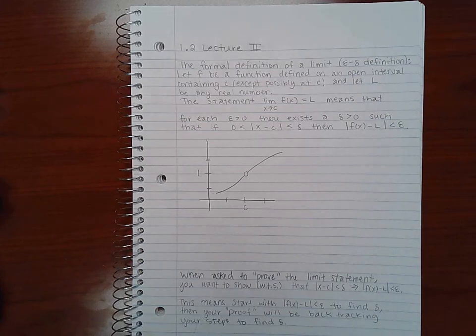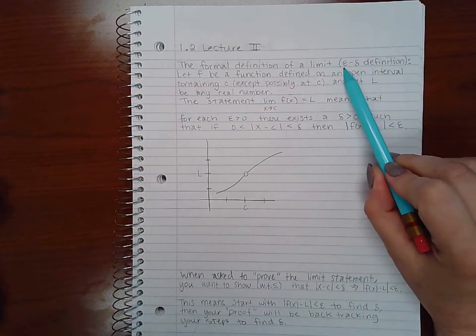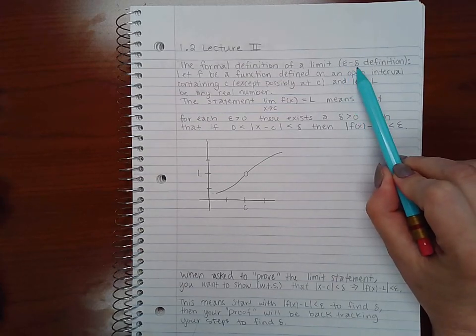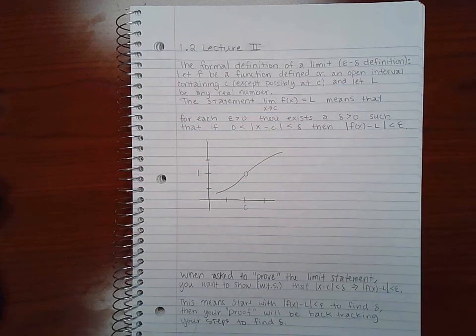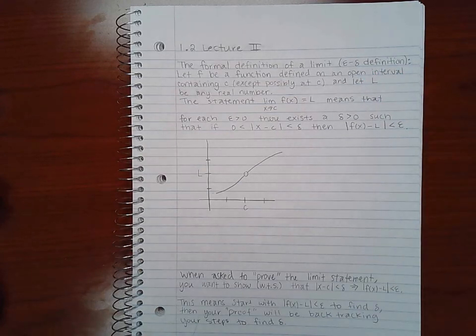This is also called the epsilon-delta definition. These are Greek letters - this is the Greek letter epsilon and this is the Greek letter delta. In the American alphabet this would be like E and D.